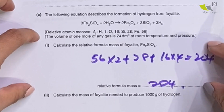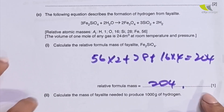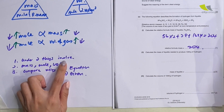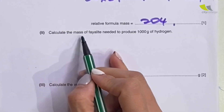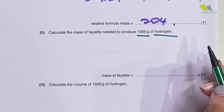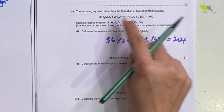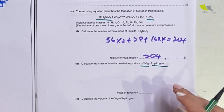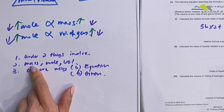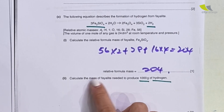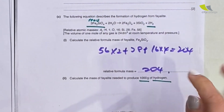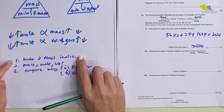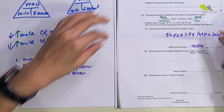The main parts are part two and part three. Going back to the three steps — step one: underline the two things involved. The question says calculate the mass of fayalite needed to produce 1000 grams of hydrogen gas. So I underline fayalite and 1000 grams of hydrogen. Step two: the question asks for mass of fayalite, so I write down mass. It gives 1000 grams of hydrogen — I write down mass as well.